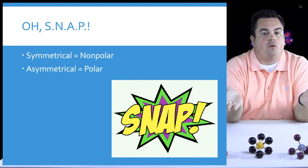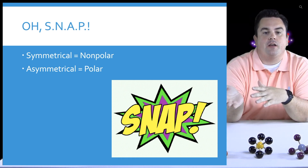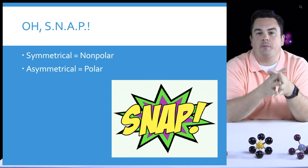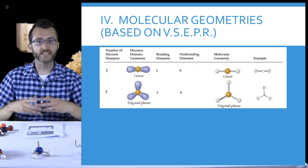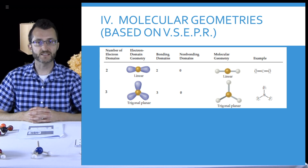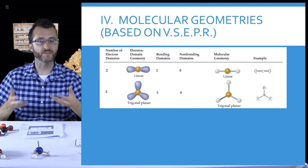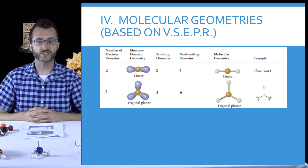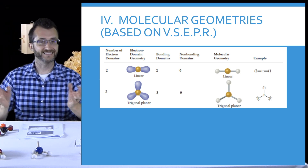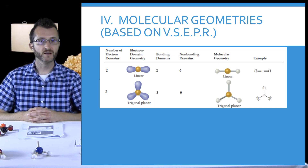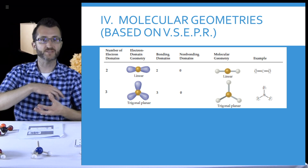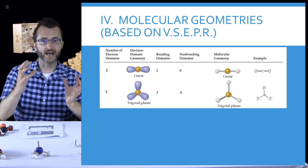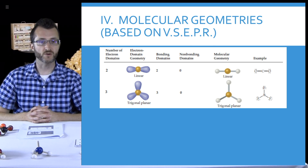S-N-A-P: Symmetrical — Non-polar molecule. Asymmetrical — Polar molecule. Great way to remember. Lastly, we're going to talk about molecular geometries. We're going to give these shapes some specific names. Molecular geometries are based on something called VSEPR — Valence Shell Electron Pair Repulsion. Because electrons repel each other, we have 3D shapes that minimize this repulsion. You're going to have to know these different shapes.